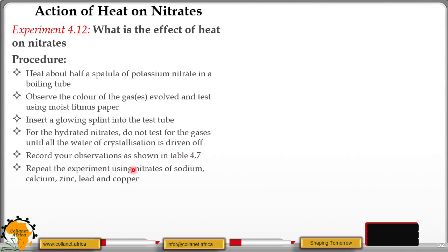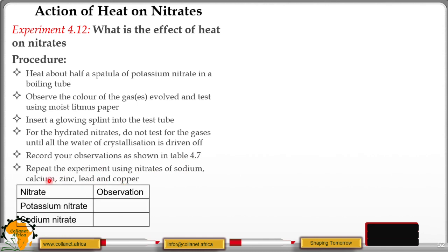Repeat the experiment using nitrates of sodium, calcium, zinc, lead, and copper. This is our table 4.7. You have the nitrates and the observations — make sure that you record all the observations, involving the gases that are being produced. Test using a glowing splint and test using the red and the blue litmus paper. They have to be moist. Also record the color changes that accompany the solids that are produced.